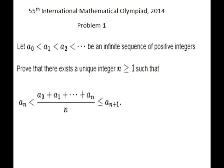We're supposed to prove that for any infinite sequence of positive monotonically increasing integer numbers, there is exactly one number n greater than or equal to 1, such that the two inequalities shown on the screen both hold. Note that the fraction in these inequalities contains n plus 1 terms that start with a0 and end with an, and this sum is divided by n.